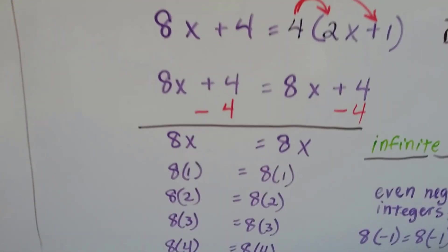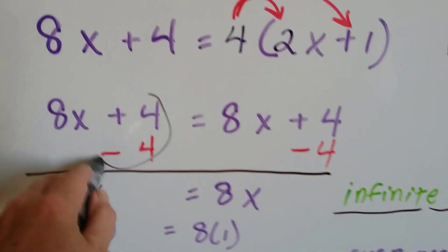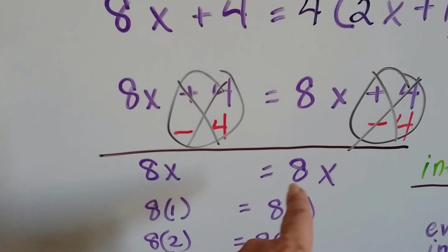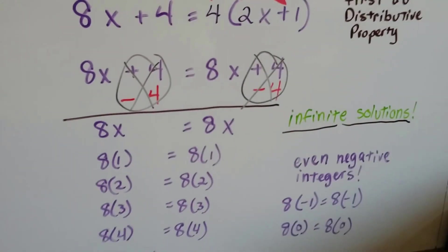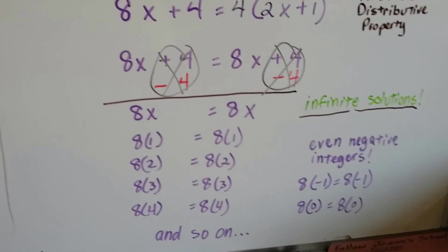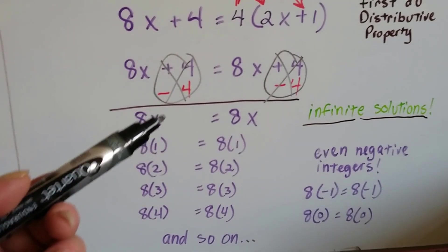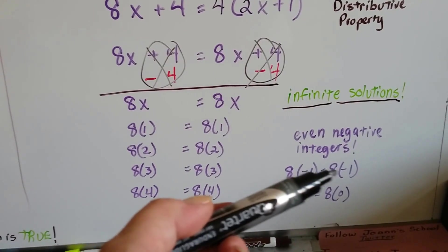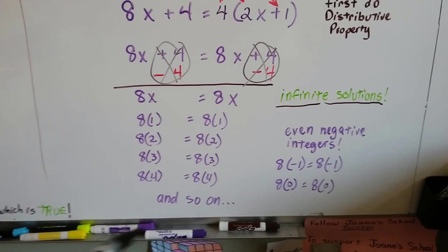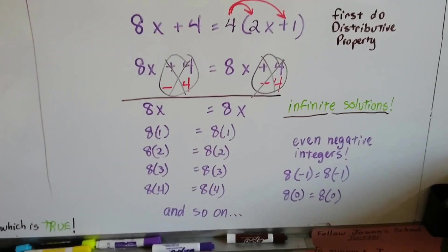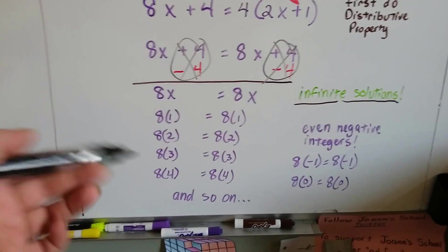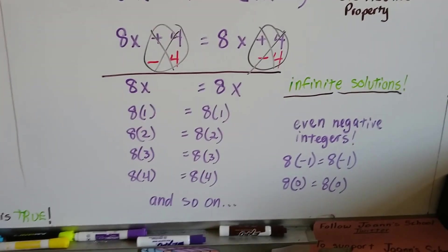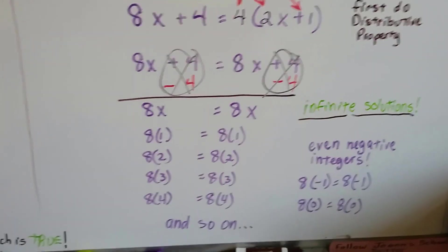They're definitely equal, and we take away 4 from each side to isolate the variable. We end up with 8x equals 8x. Well, there's an infinite number of solutions for 8x equals 8x. What is it? 8 times 1 equals 8 times 1? 8 times 2 equals 8 times 2? How about 8 times negative 1 equals 8 times negative 1? Or 8 times 0 equals 8 times 0? We could go on forever. We could go into the trillions and still be going. 8 times something is equal to 8 times that something. Infinite solutions.